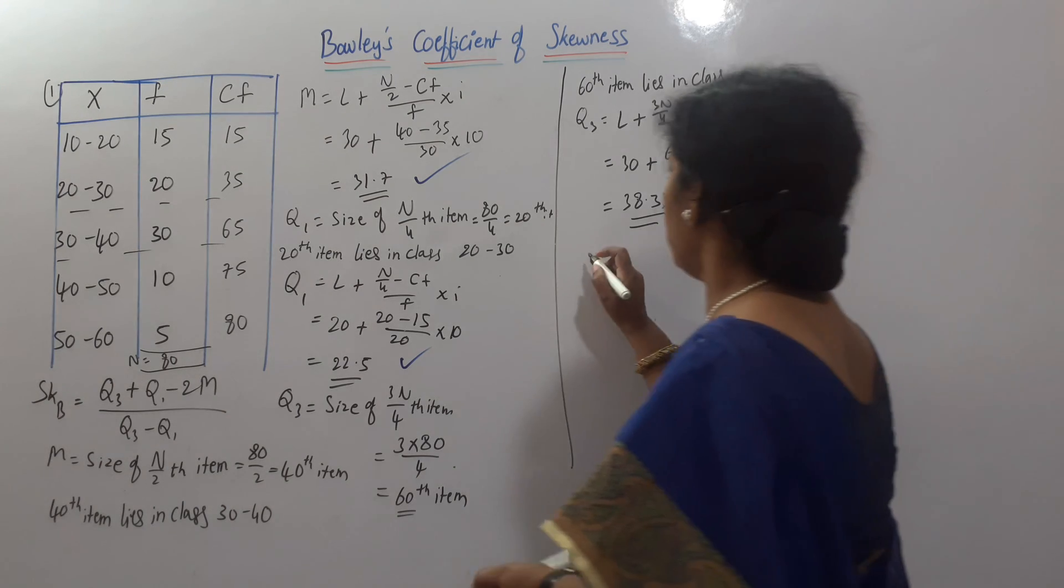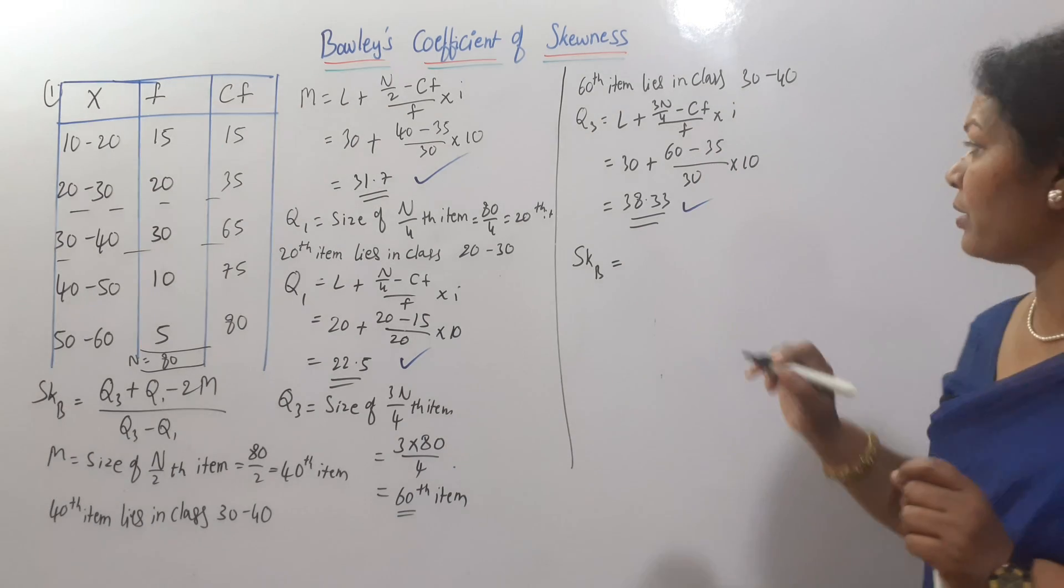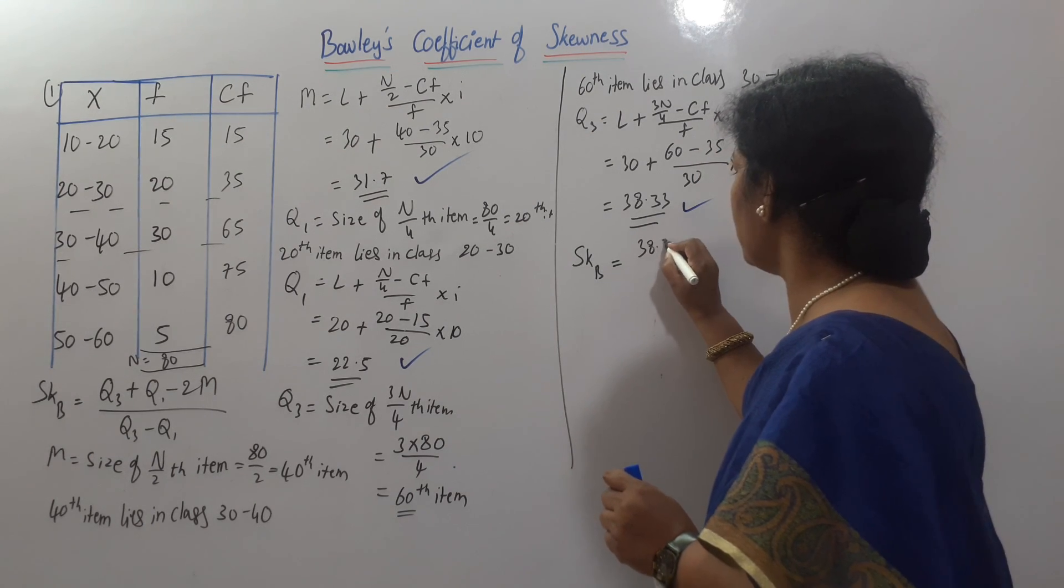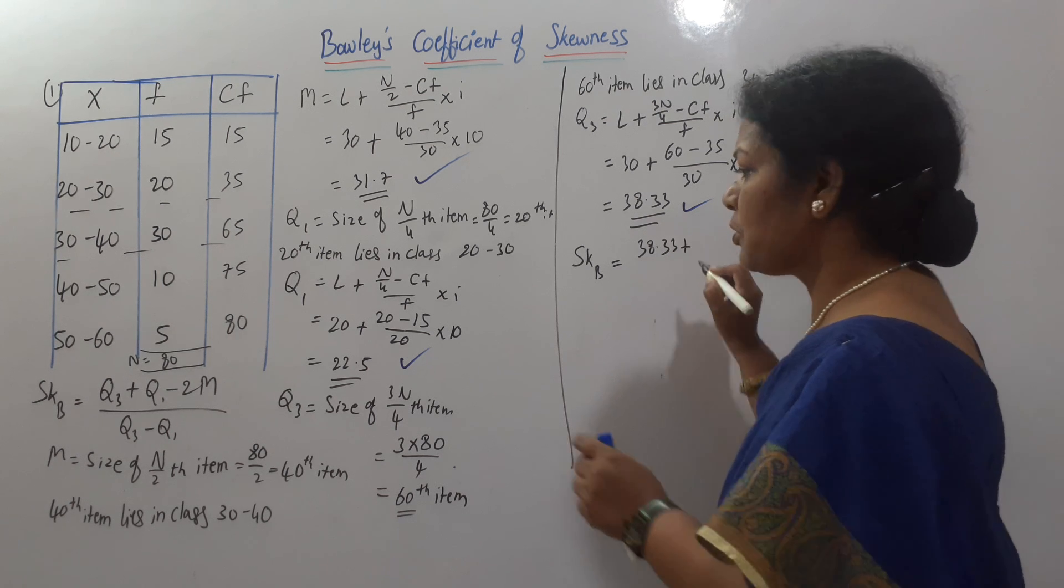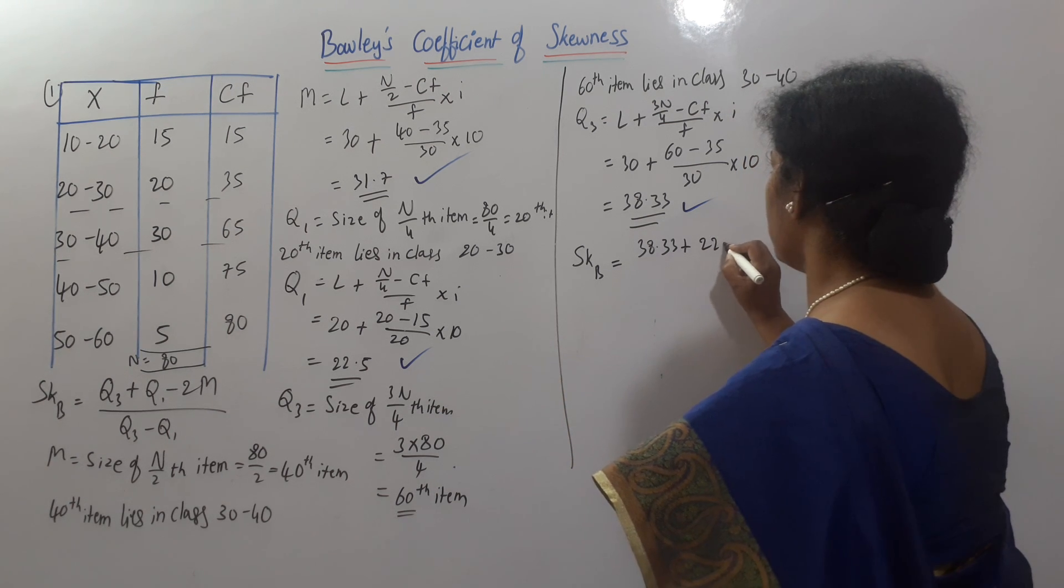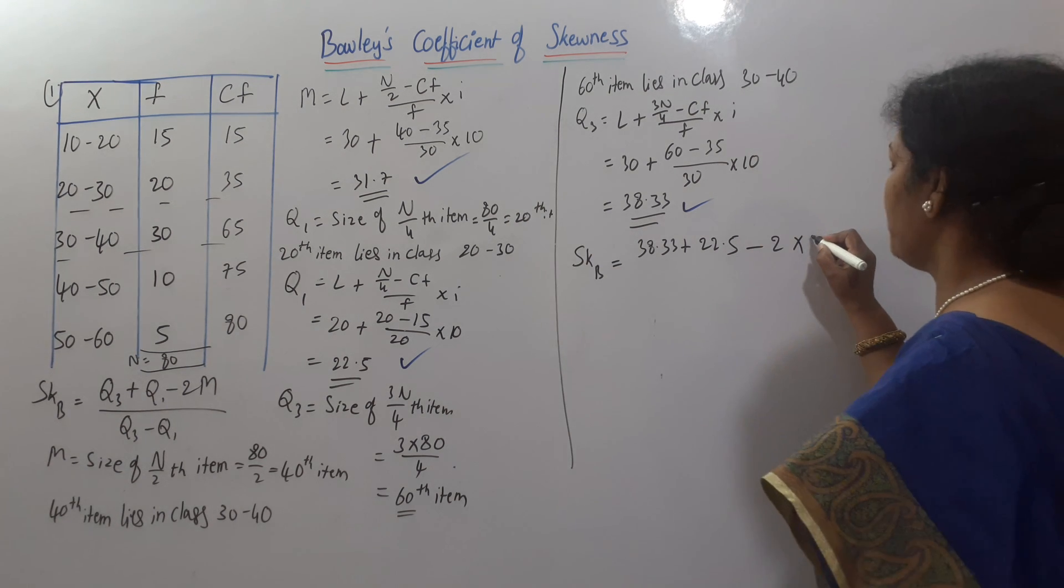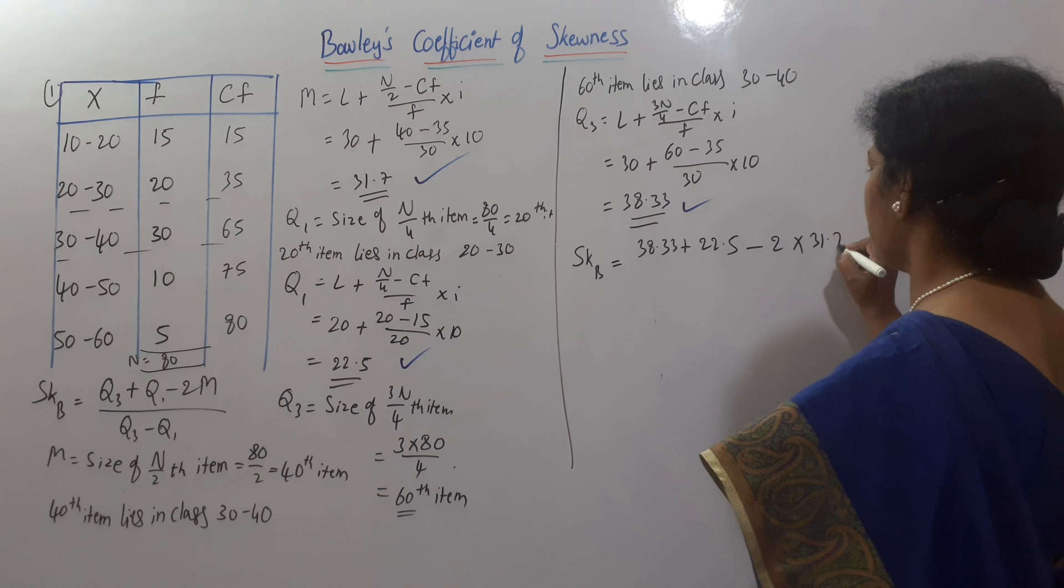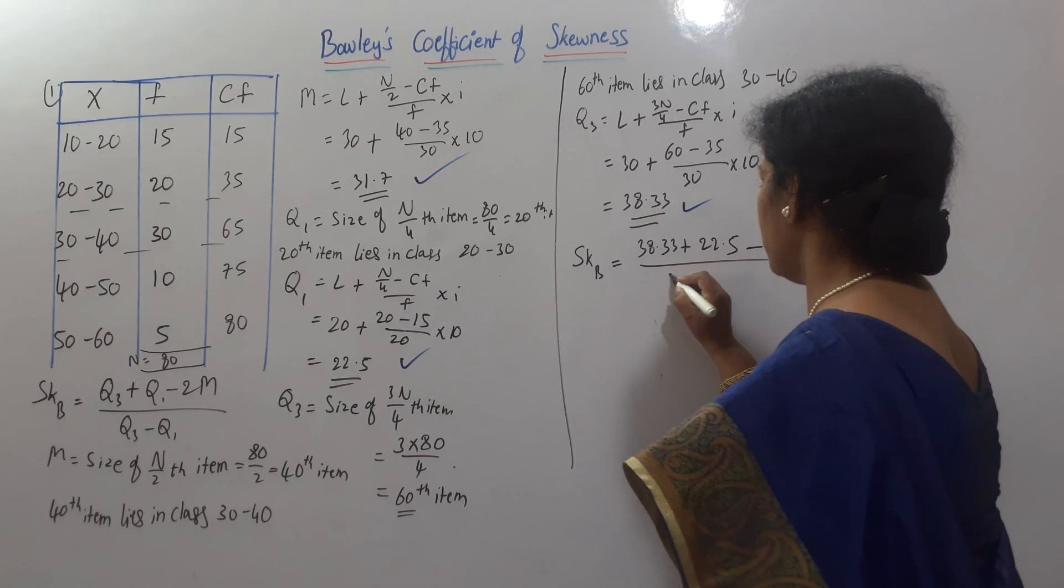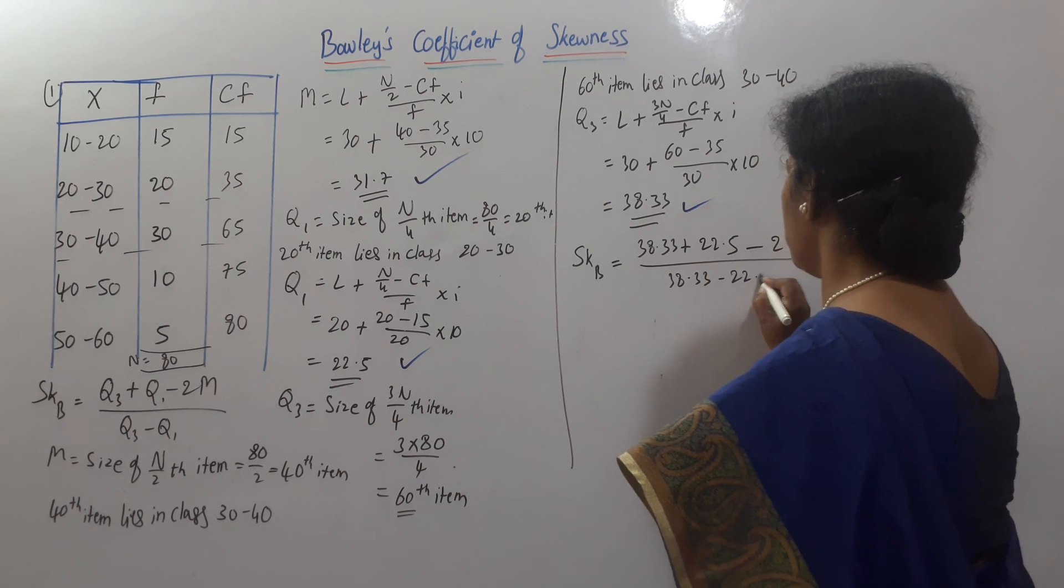SKB is equal to, what is the formula? Q3 plus Q1. Q3 is here 38.33 plus Q1. Q1 is 22.5. Minus 2 into median. Median is 31.7. Divided by Q3 minus Q1. Means 38.33 minus 22.5.